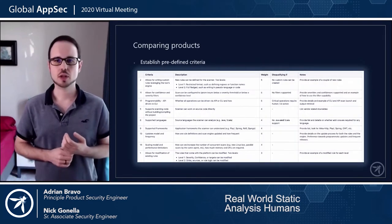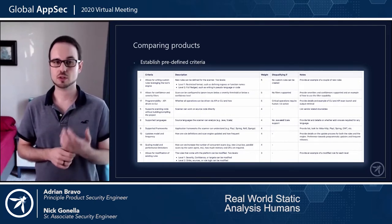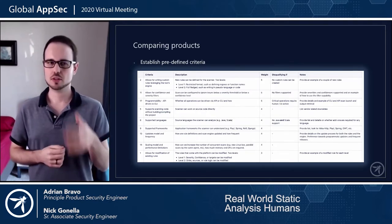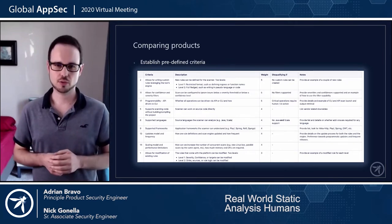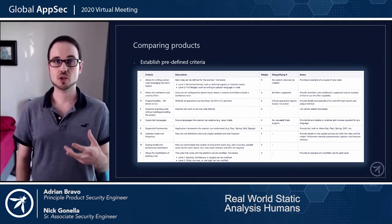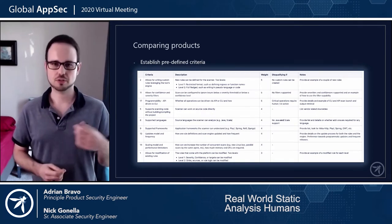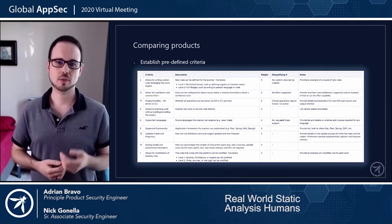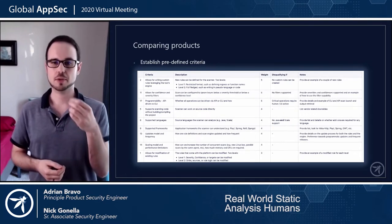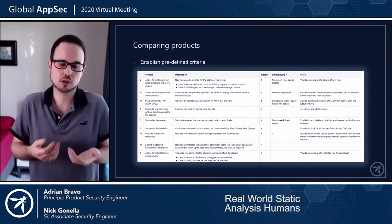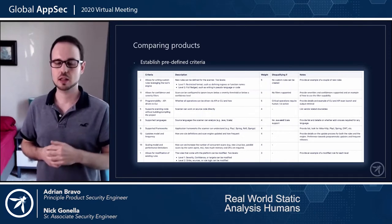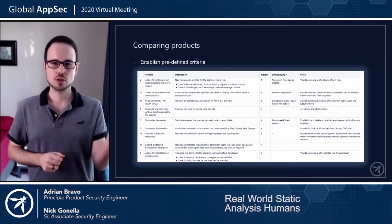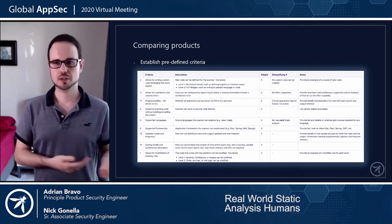When comparing products, we strongly encourage you to establish predefined criteria before you go out and look at vendors. Sit down and write down all the criteria you consider important and relevant. For us, most of it revolved around automation, quality of results, false positive ratio, and false negative ratio. We had weighted scores and some disqualifying criteria — if a tool didn't meet certain criteria, we stopped evaluating it. You can then score tools against these criteria to obtain a numerical, objective comparison.